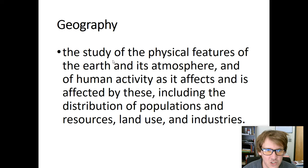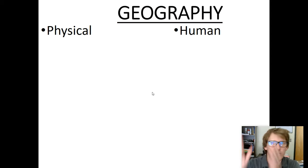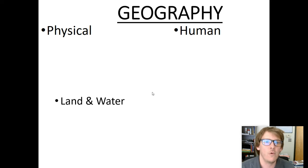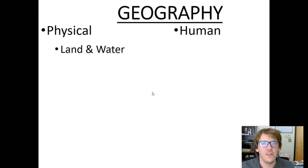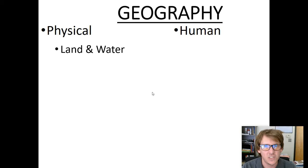Going back to that definition: physical features and human interaction. That's really what we're talking about with geography — physical geography and human geography. Let's talk about physical geography first. We're mainly talking about natural geography, the nature, the things when you think of the land, the air, the water. It wouldn't matter if there weren't humans on the earth — we could still study this. It did exist because humans haven't been here forever.